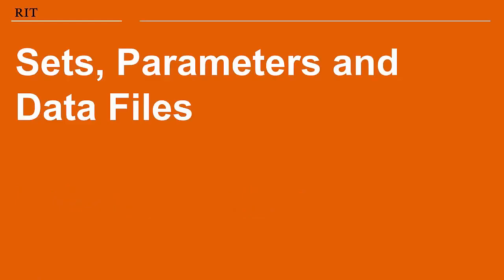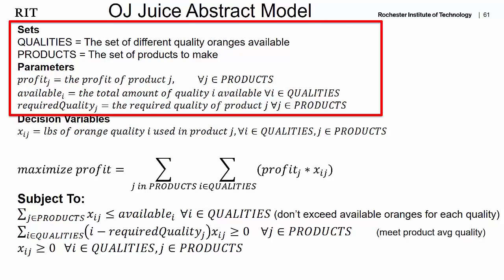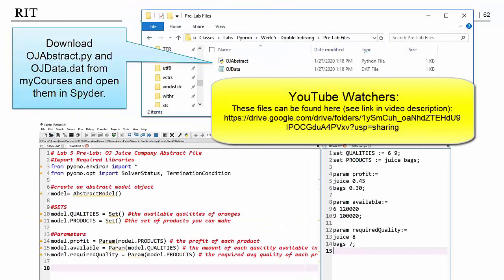Let's start with the sets, parameters, and the data file. If we look at our OJ abstract model, this first part of the video is covering the first lines of this abstract model: the declaration of the sets, the declaration of the parameters, and how to put that information efficiently into the data file. I've given you a place to start — if you go to my courses, you should find OJAbstract.py and OJdata.dat. Grab both those files, save them into the same folder on your computer, and when you open them in Spyder you should see something like this if you have a split screen.